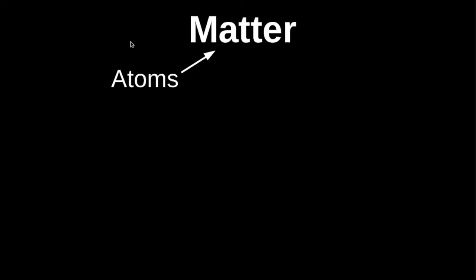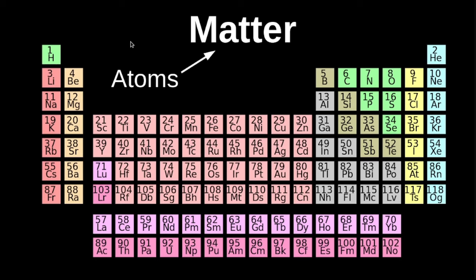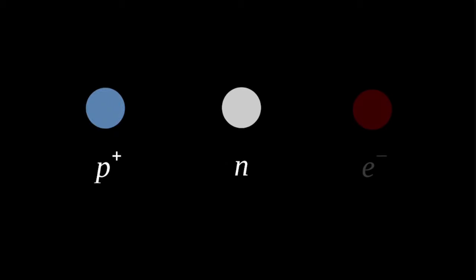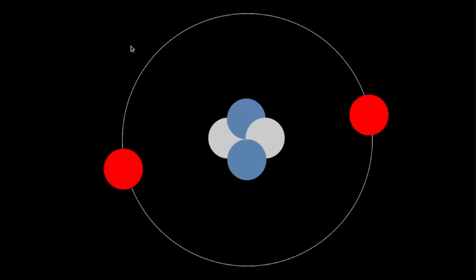When we talk about matter, we're really just talking about atoms. Here's your periodic table of elements — these are all just atoms. And what are atoms? They're made up of protons, neutrons, and electrons: the proton being positively charged, the neutron being neutrally charged, and the electron being negatively charged. These all come together to form an atom.